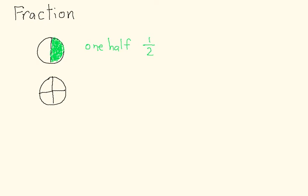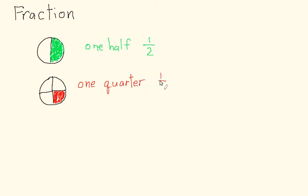Each part is called a quarter. Let me shade one piece in red — one quarter of the circle. A quarter is the same as one over four, and it's written as one fourth. So quarter is synonymous with one fourth of the circle.